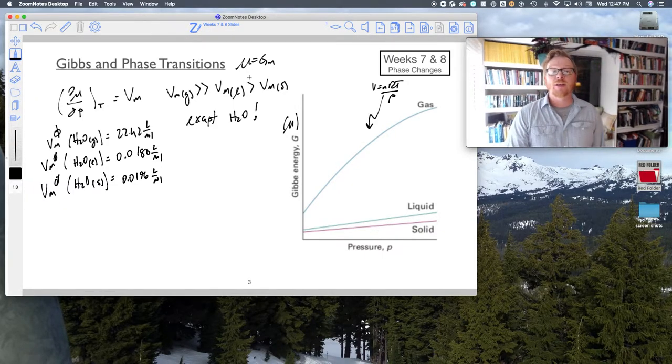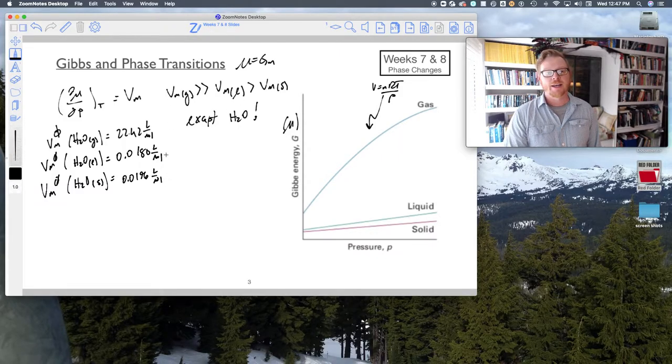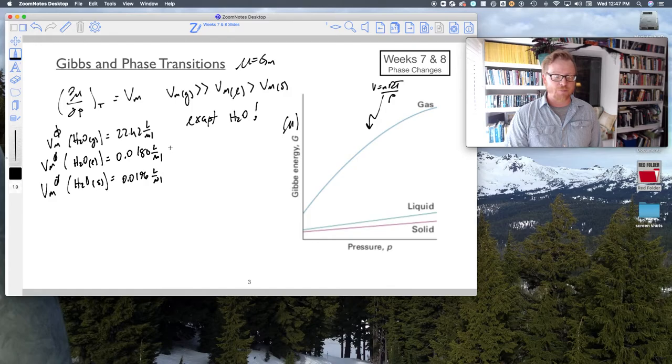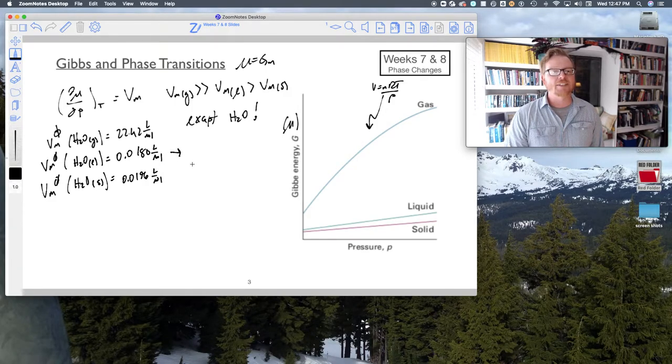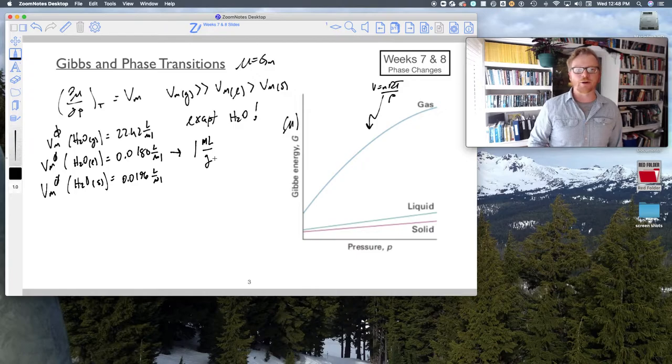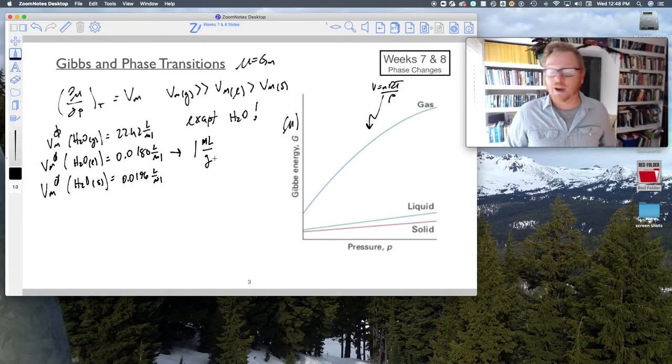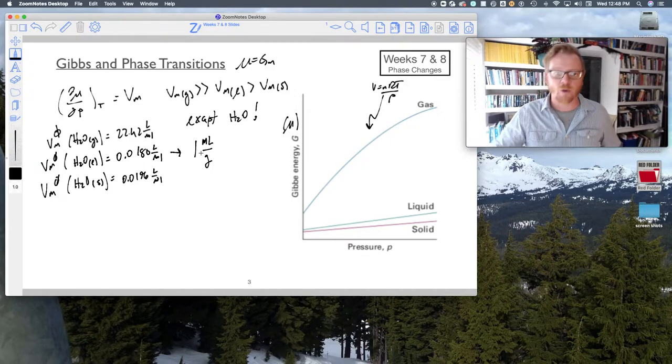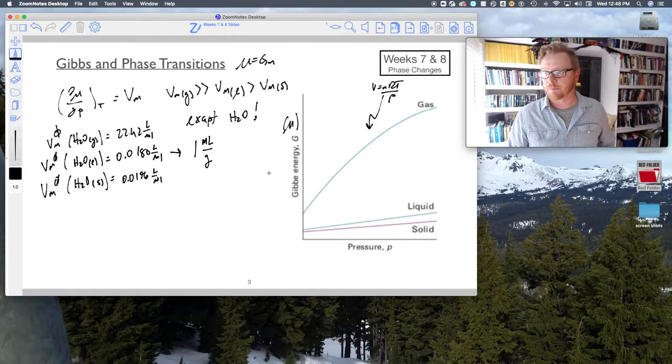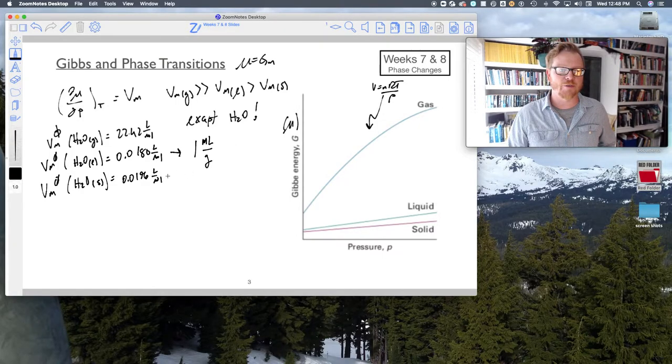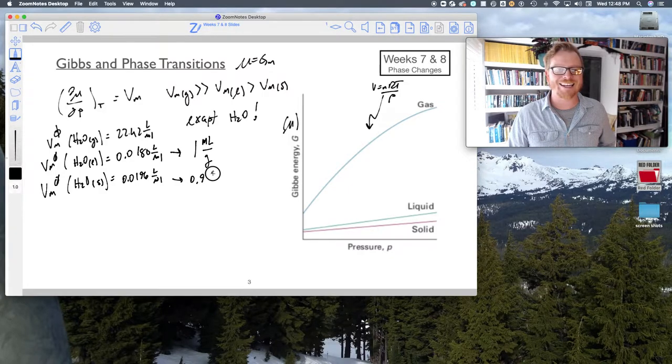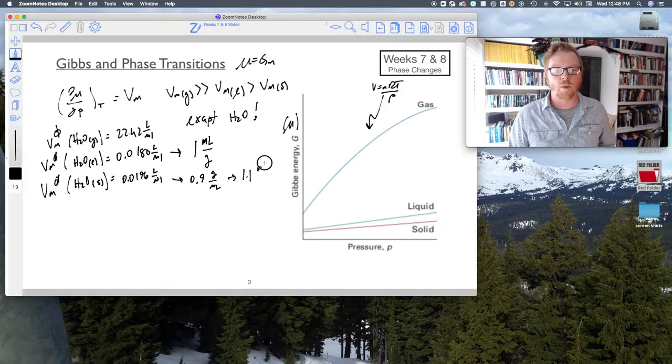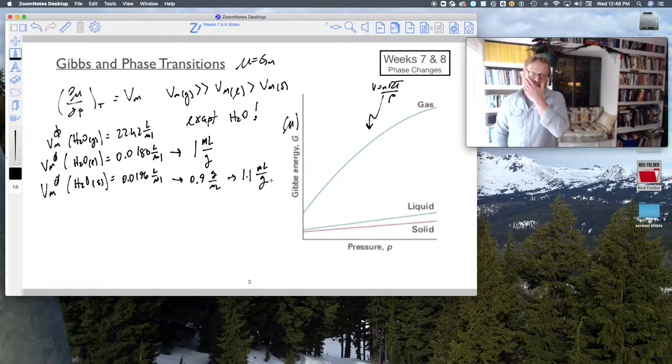Most of the time, the volume of a liquid should be greater than the volume of a solid, but water is our exception. Now you might be asking, how did I get these numbers? Well, it's liter per mole. I got this from using the approximate density of one milliliter per gram. I know that's backwards—I know you want to say one gram per milliliter—but I want to get this in terms of volume, not mass. This is from the approximate 0.9 grams per milliliter, or about 1.1 milliliter per gram. That's where these numbers are coming from.